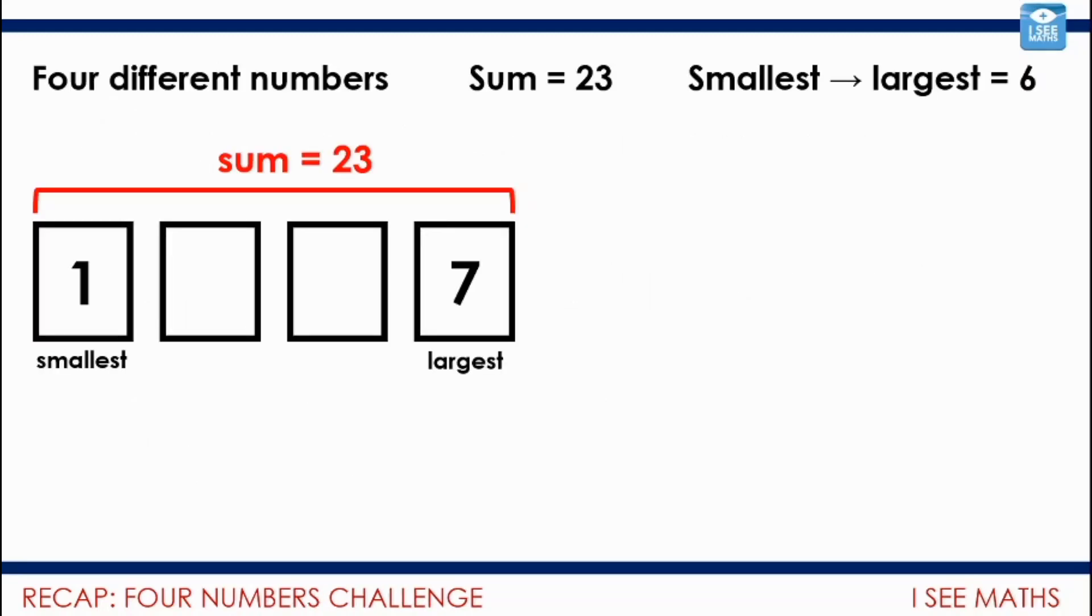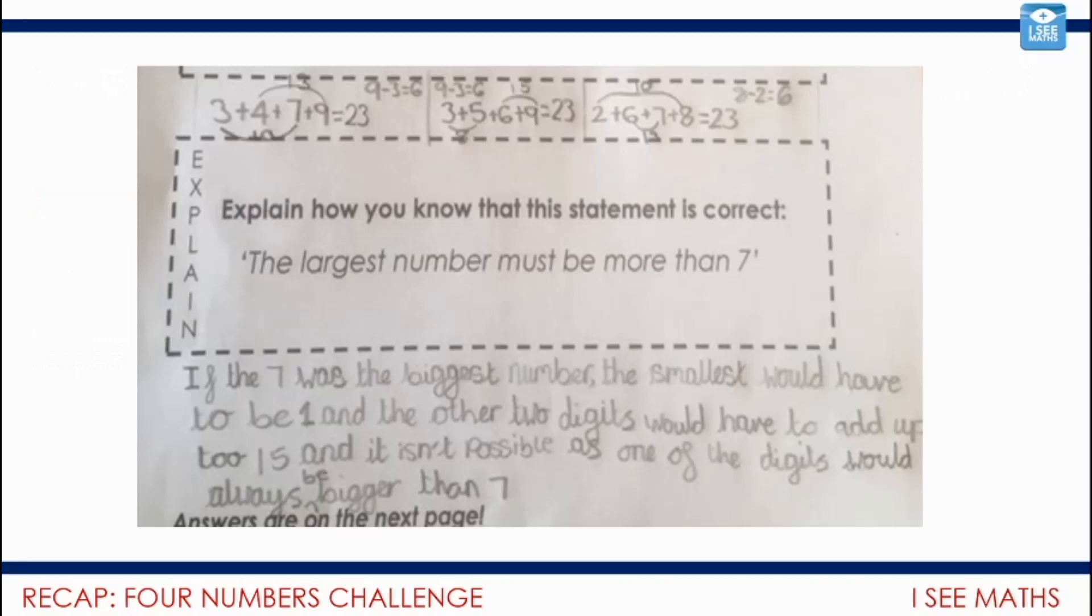It was very similar thinking that we used to that in yesterday's main task. Four different numbers. The sum of the numbers is 23. The difference between the smallest and the largest number is 6. Let's say we tried and we thought well could the smallest number be 1 and the largest be 7? Have a look at this fantastic reasoning here.